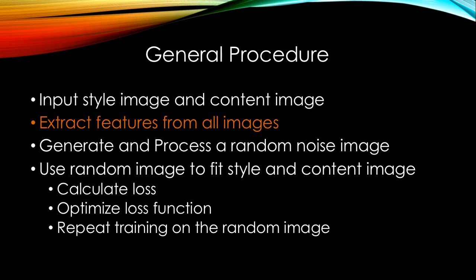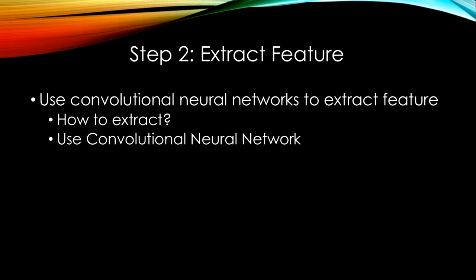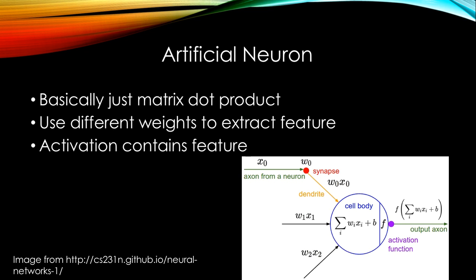Next, we'll extract features from the image matrix. How do we extract features from image data? We use a convolutional neural network. The basic unit in a convolutional neural network is a neuron — basically a matrix dot product. For one value in our data X, we use a weight and an intercept to get an activation value. For a whole matrix of X, we have a weight matrix to calculate the dot product. A large weight means that a neuron is very interested in a particular feature — for example, a round-shaped wheel in a picture of a car. The resulting activation values contain the features that these neurons find most interesting.